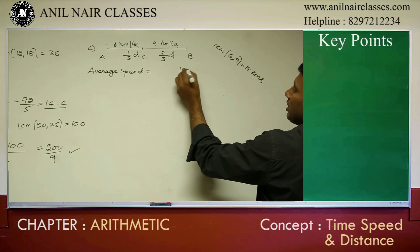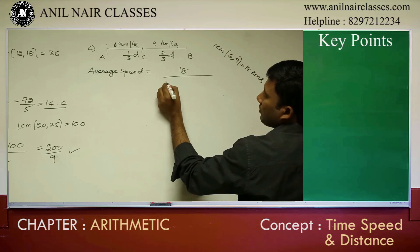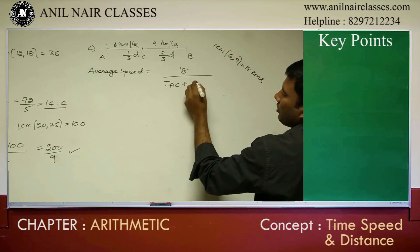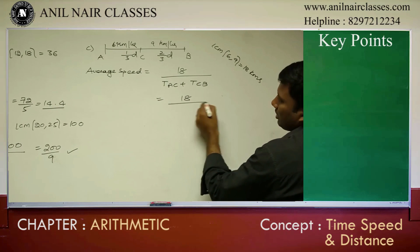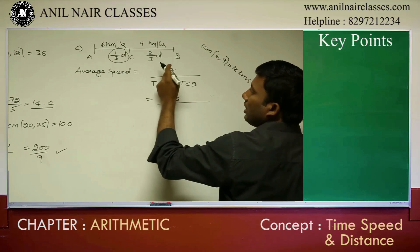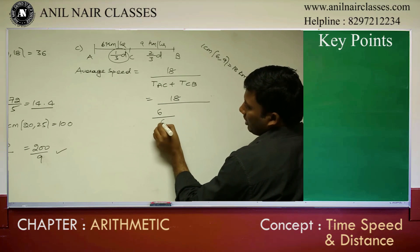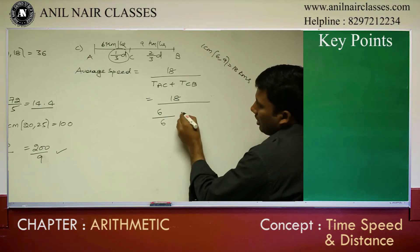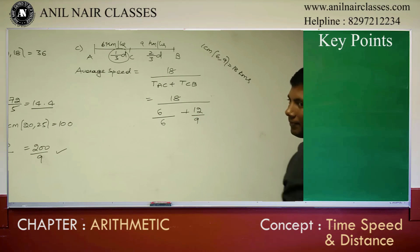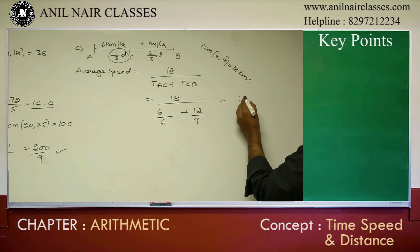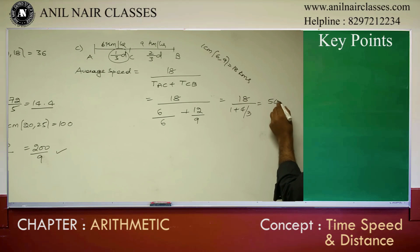Total distance is 18. One-third of 18 is 6, divided by speed 6. Out of 18, the remaining two-thirds is 12, divided by speed 9. Adding the times: 1 plus 4 by 3, giving us total time of 7 by 3. So average speed equals 18 divided by 7 by 3, which is 54 by 7 kilometers per hour.